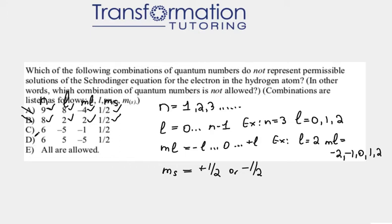Now let's go to choice c. Our n is 6. That's an integer. That's fine. Now if our n is 6, what could our l be? l has to go from 0 to n minus 1. So it could be 0, 1, 2, 3, 4, or 5. Because 6 minus 1 is 5.